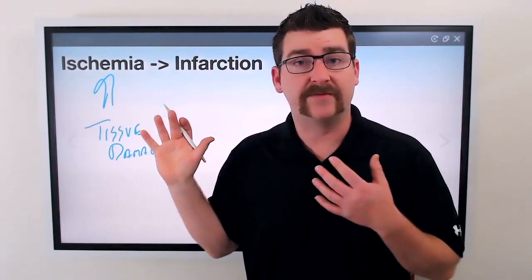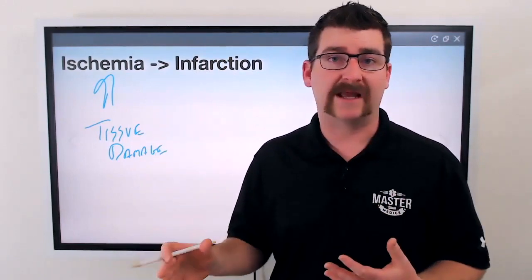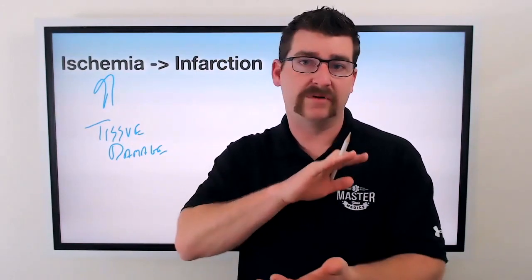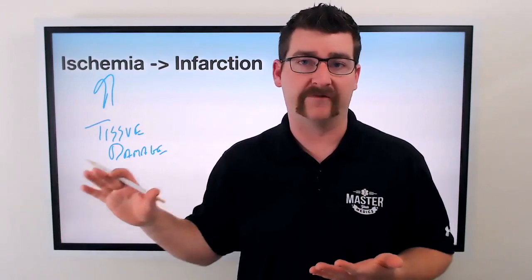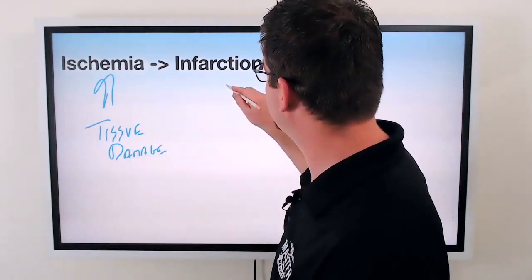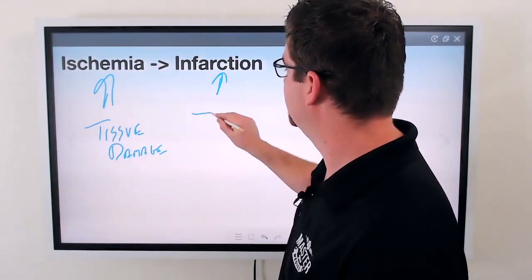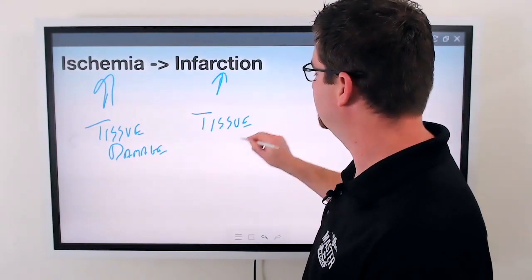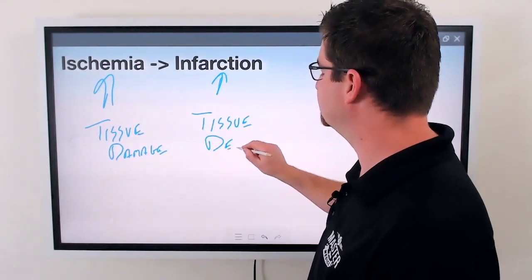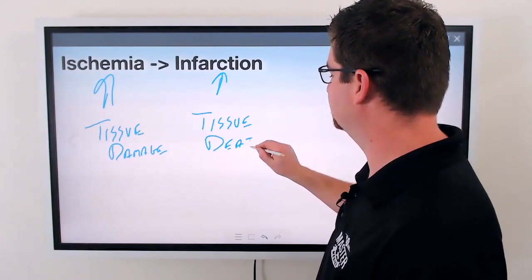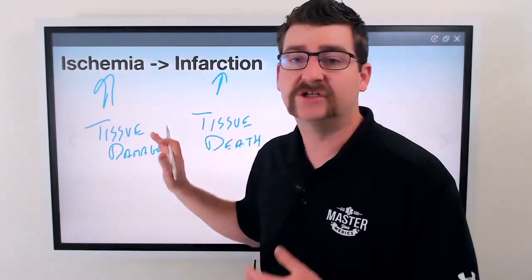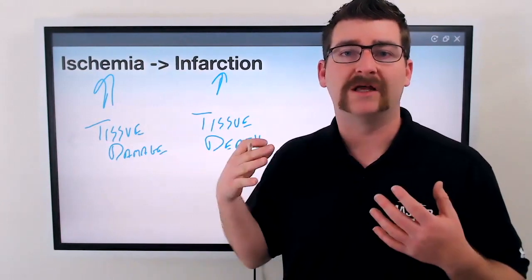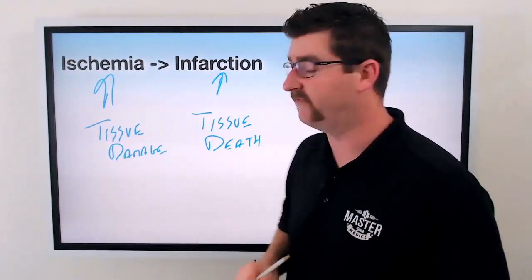If that ischemia progresses and there's not enough perfusion for a long enough period of time, or there's a complete lack of perfusion, that can end up causing infarction. An infarction is just tissue death. This is not reversible. So again, ischemia is tissue damage; infarction is tissue death, and is not reversible.